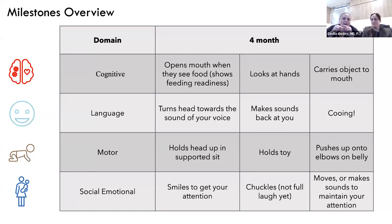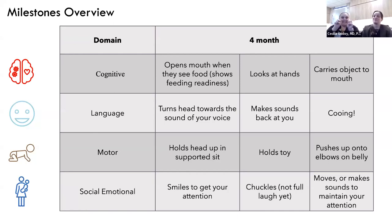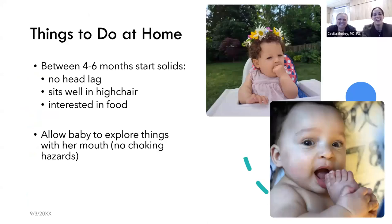Social-emotionally at four months: babies now smile to get your attention. Before they smiled in reaction to seeing you; now they think, 'let's see how cute I can be,' and flash a big smile to make you smile back. They also start to chuckle. When they see you looking at them, they kick fast or make sounds to maintain your attention — they're trying to show off to keep you engaged.